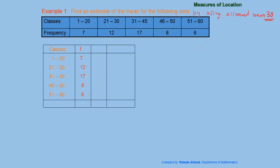We make a vertical table with the classes and their frequencies. We find the class mark — the mid-value — by adding the class boundaries and dividing by 2. So the class marks are: 10.5, and so on. Then we make a column for x minus A, which means x minus 30.